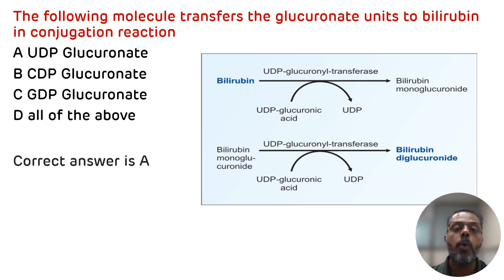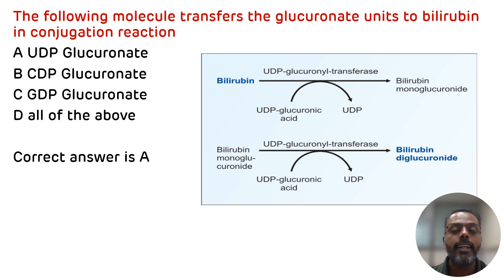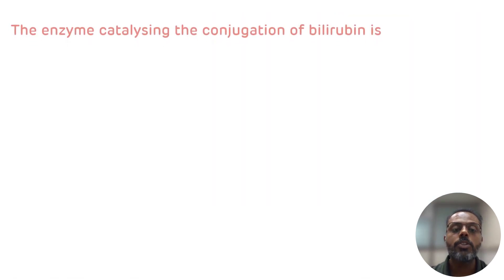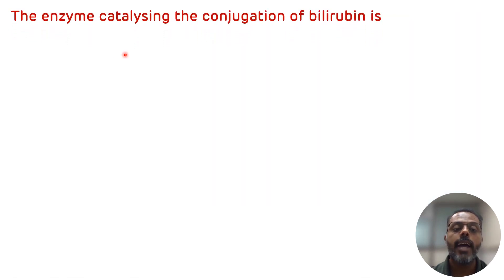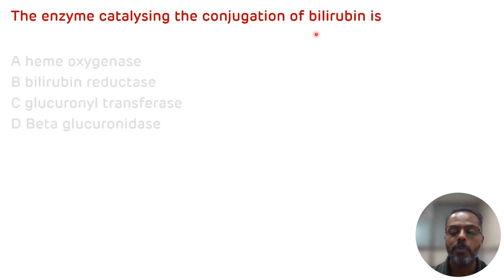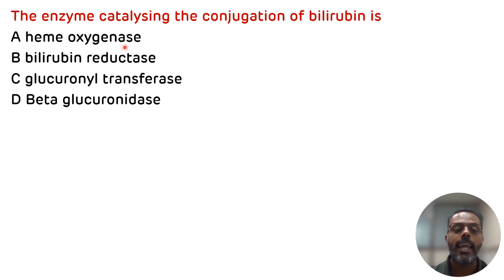Now one more multiple choice question related to the same topic. The question is: the enzyme catalyzing the conjugation of bilirubin is — and the options are A. heme oxygenase, B. bilirubin reductase, C. glucuronate transferase, and D. beta glucuronidase.